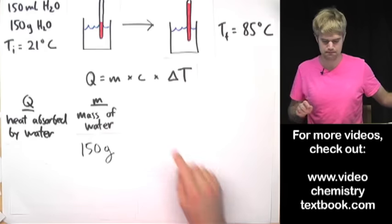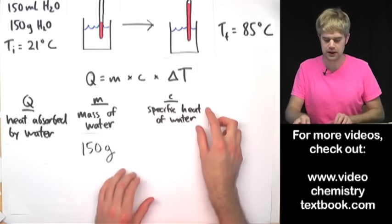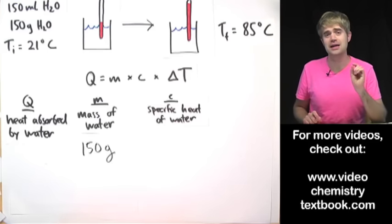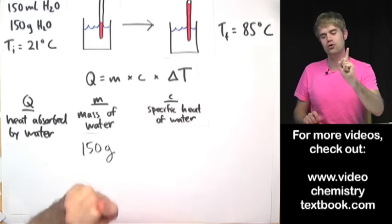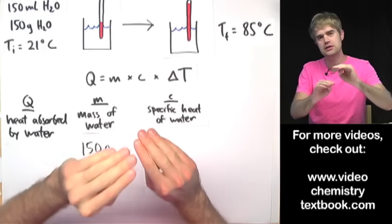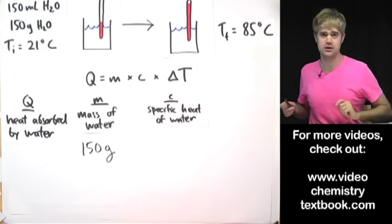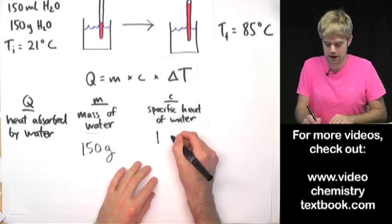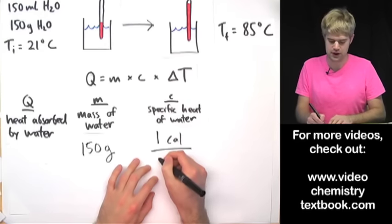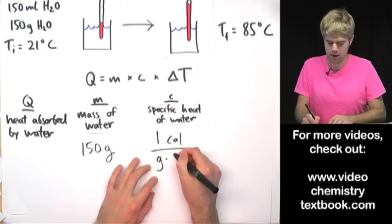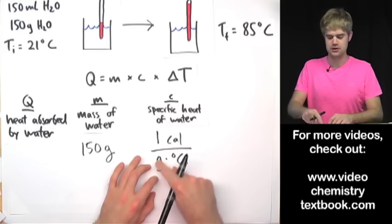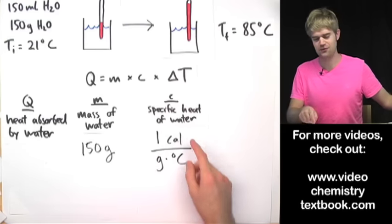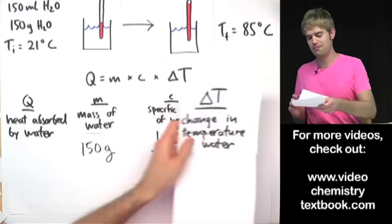C is the specific heat of the water — that's how many calories are required to take 1 gram of water and raise its temperature by 1 degree Celsius. For water, this is 1 calorie per gram per degree Celsius. If you didn't remember this, you could easily find the specific heat of water on the internet or in a book.